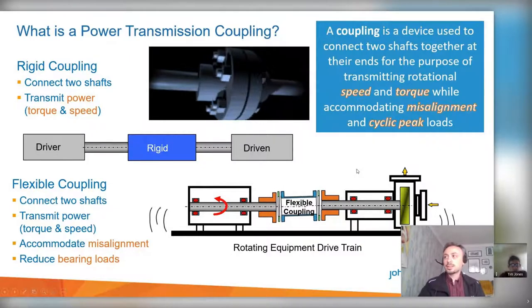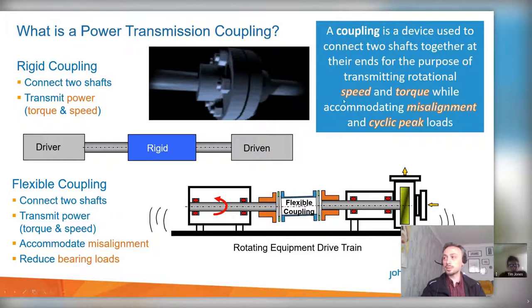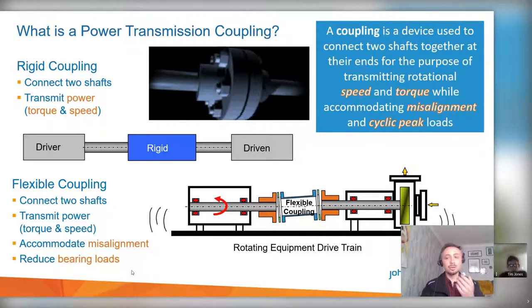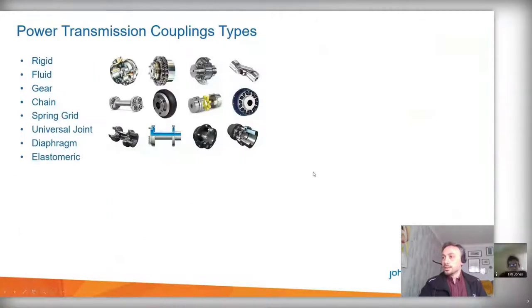A coupling is basically a device — simple or complex — that connects two shafts from their ends, with the purpose of transmitting power through rotational speed and torque. The simplest coupling is the rigid coupling: a rigid piece connecting two shafts, where a driver machine drives the driven machine. The key difference with a flexible coupling is that it can also accommodate misalignment, which reduces bearing loads. Industry often involves high operating speeds, high torque, and significant misalignment, so flexible couplings help to reduce lateral forces and bending moments on bearings.